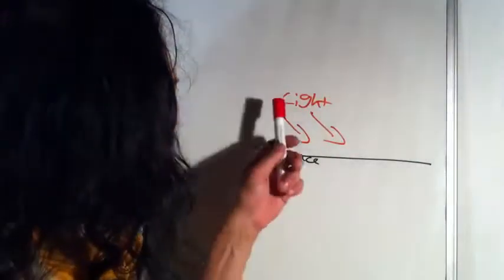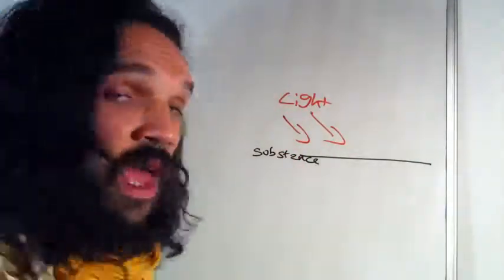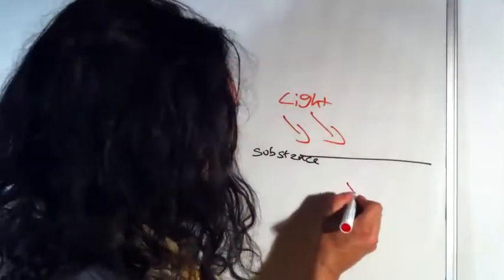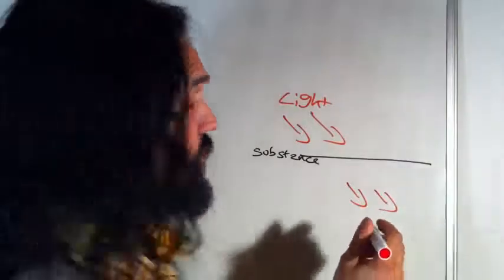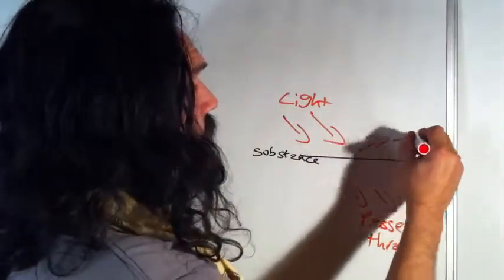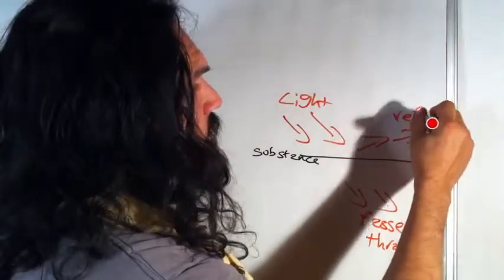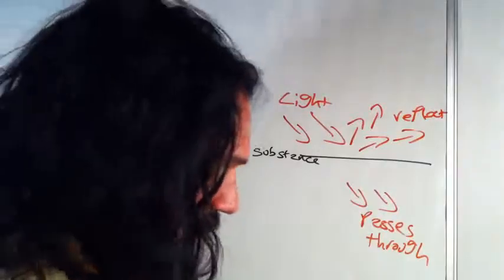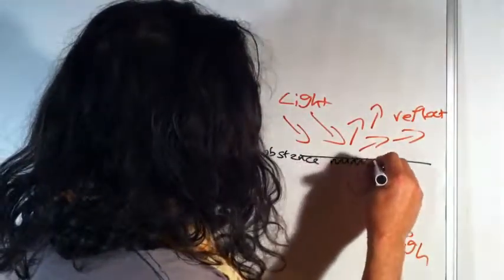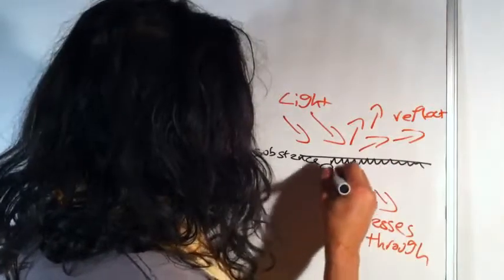So how does that come about? Let's have a look. So light is approaching substance and four things happen in different degrees. The first thing that happens is some of the light, well it's not in any order really, so some of the light passes right through. Some of the light is reflected. Some of it is refracted, which means it bounces off at an odd angle, and some of it is absorbed.